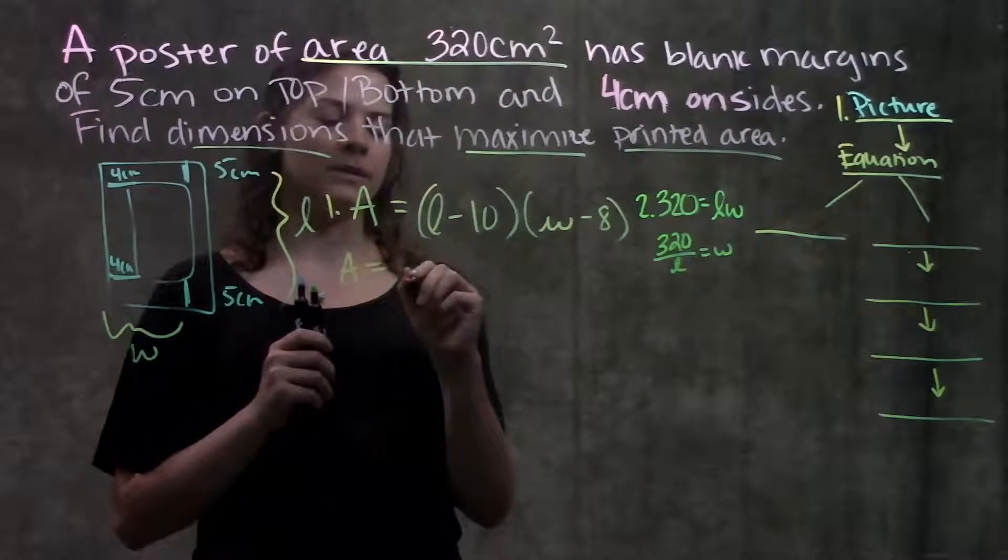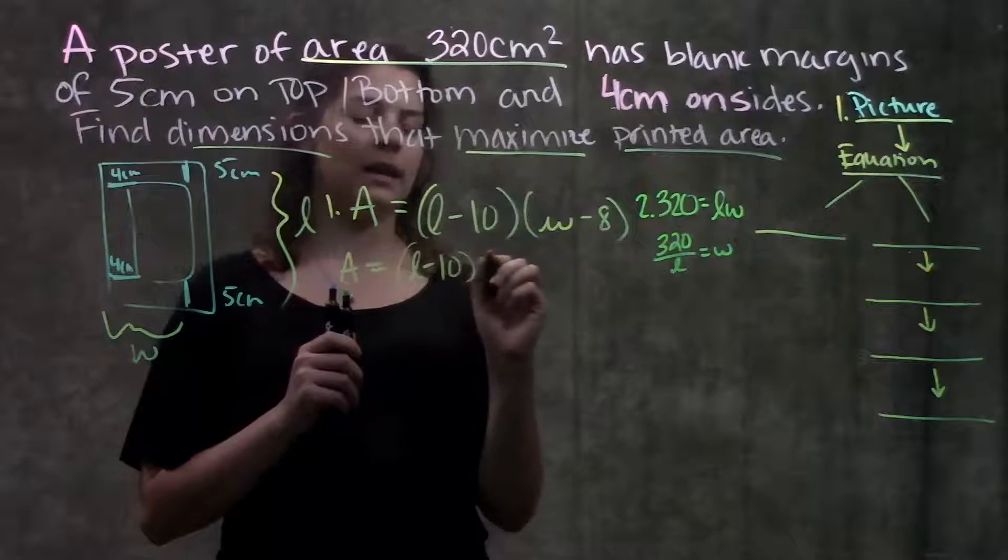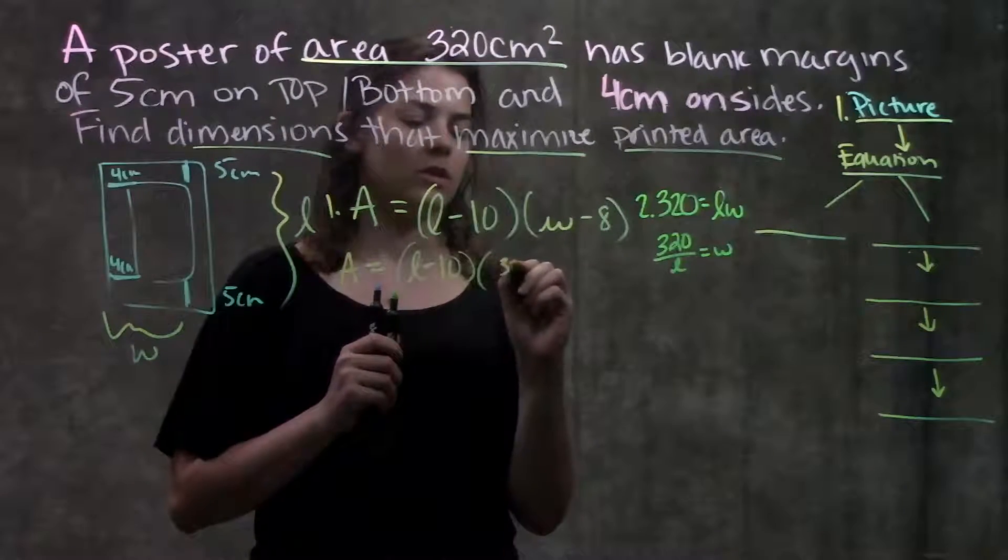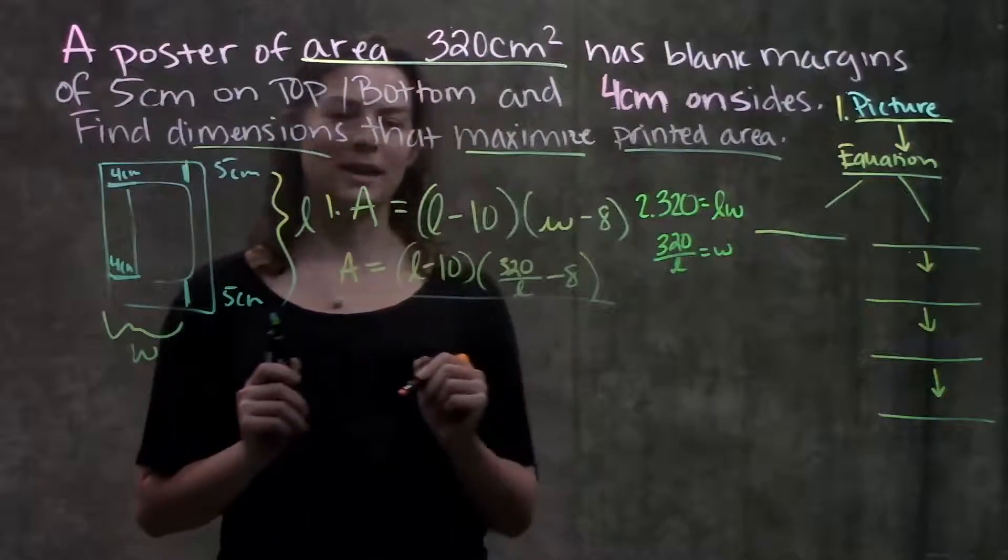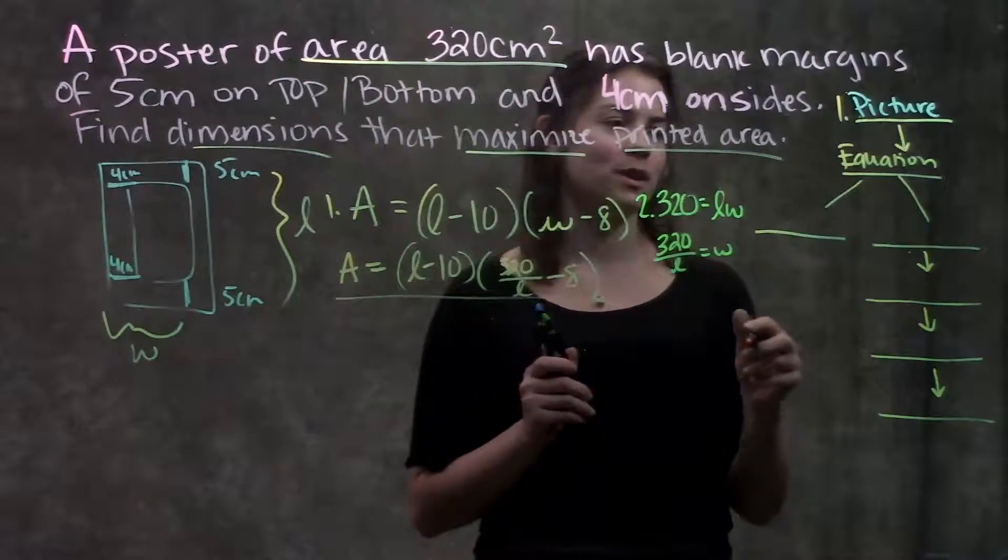Now I can plug this W into here and I'll have an equation in terms of only two variables. So now my function becomes the area is equal to L minus 10 times 320 over L minus 8. Okay, good stuff. We have an equation.